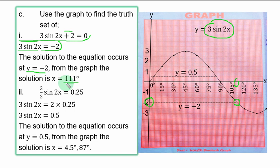Remember that question 2, you should find the truth set of 3/2 sin2x = 0.25. To get the graph that is plotted or the equation, you have to multiply through by 2 to remove the denominator 2. That is clear fraction. And you have 3sin2x = 2 × 0.25, and that is 3sin2x = 0.5. This means that the solution to the equation occurs at y = 0.5. You move to the y-axis. We have stated that one line is 0.1. So if you count 5 lines, somewhere here is 0.5.